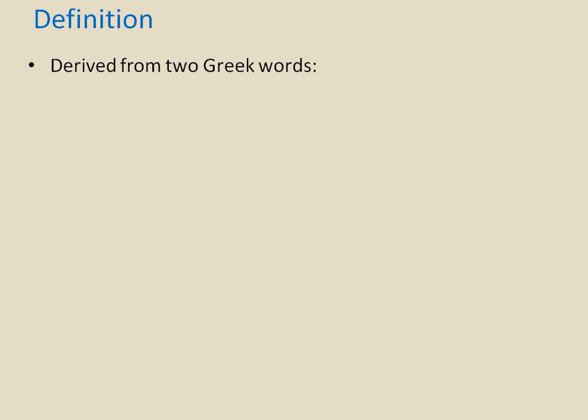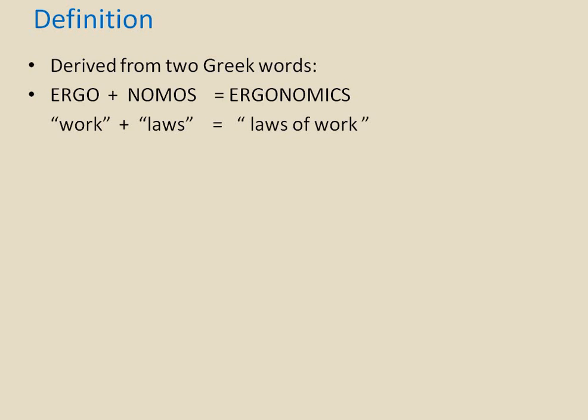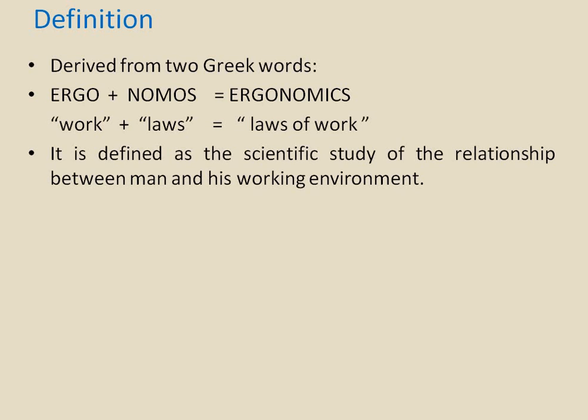Ergonomics is derived from two Greek words: Ergo plus Nomos equals Ergonomics. Ergo means Work and Nomos means Laws, so Ergonomics means Laws of Work. Ergonomics is the subject which studies about the laws of work.